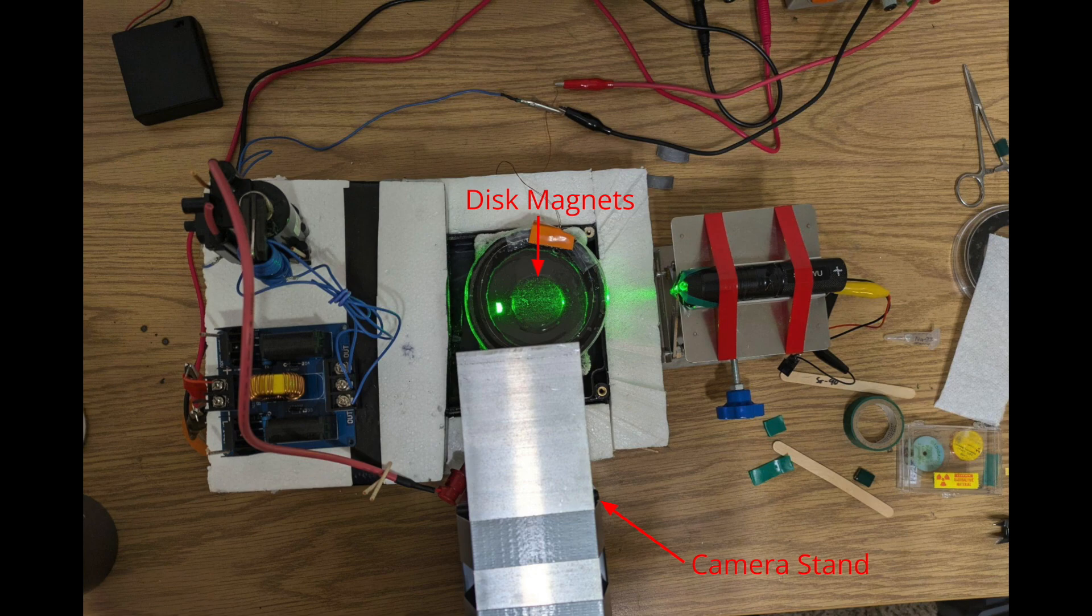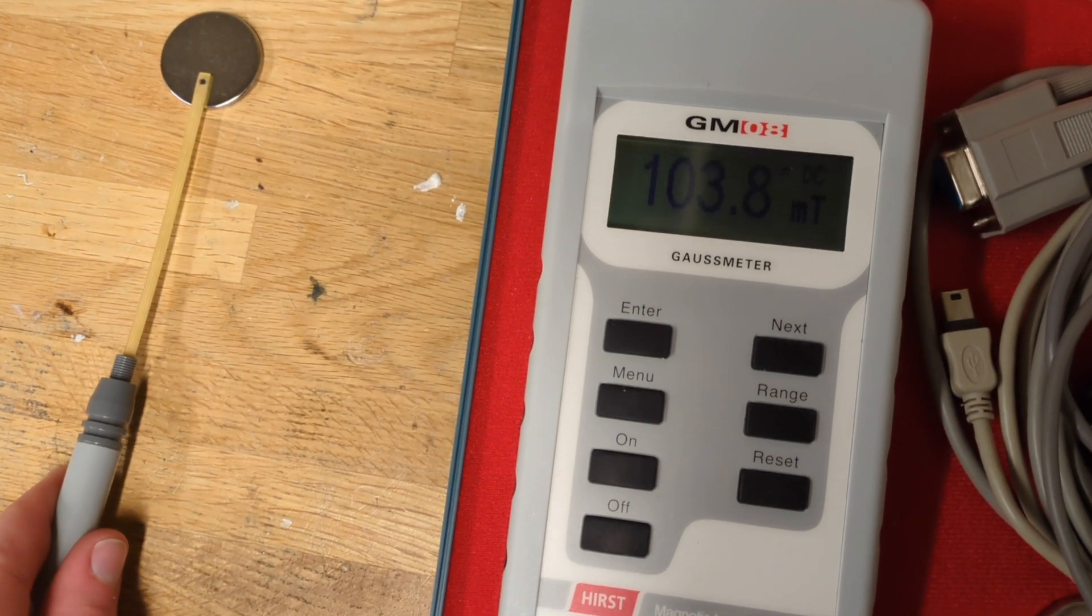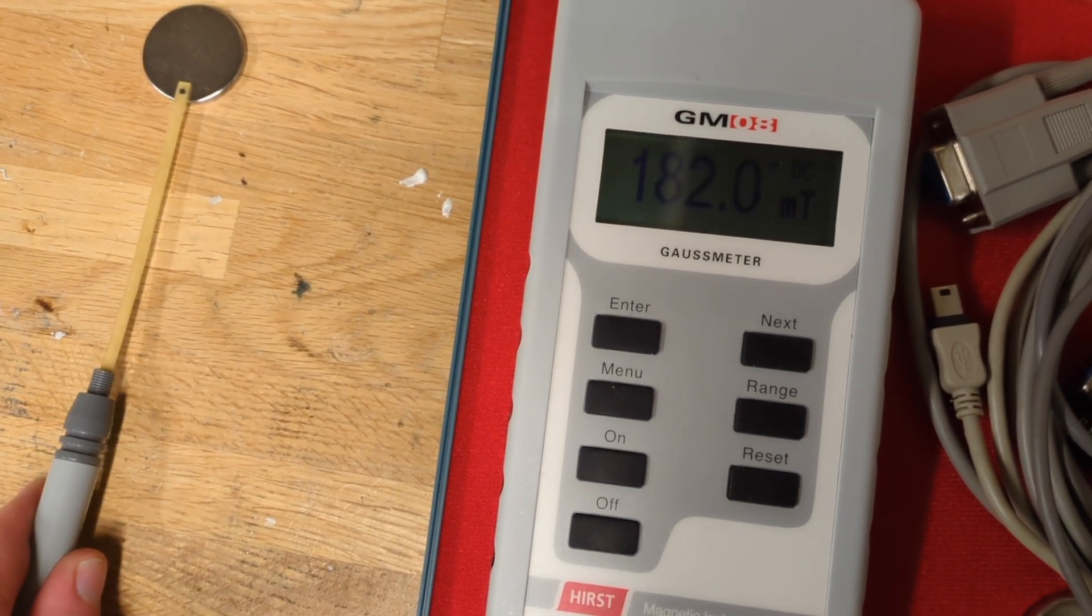A stack of two disc magnets in the center create a vertical magnetic field. The north end of the magnet is facing the camera, and I measured the vertical magnetic field strength on the surface to be about 90 to 185 militesla, with the field being stronger near the edge.